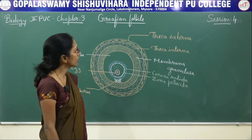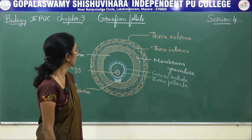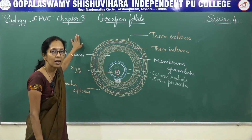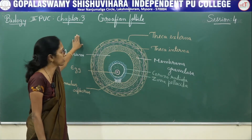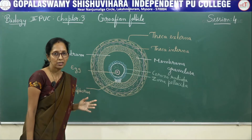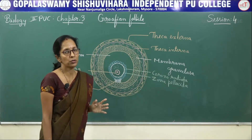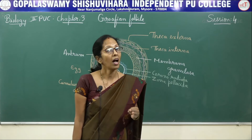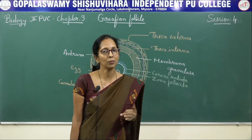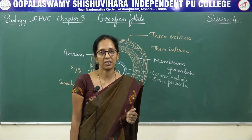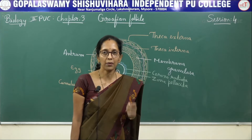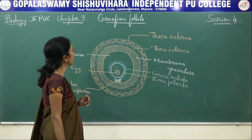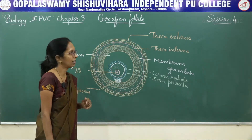Hello everyone, welcome to session number 4 of chapter number 3, Human Reproduction. In the previous sessions we understood the male reproductive system, female reproductive system, and how there will be a synthesis of gametes that takes place in the reproductive gonads. In this session you are going to study the graafian follicle.